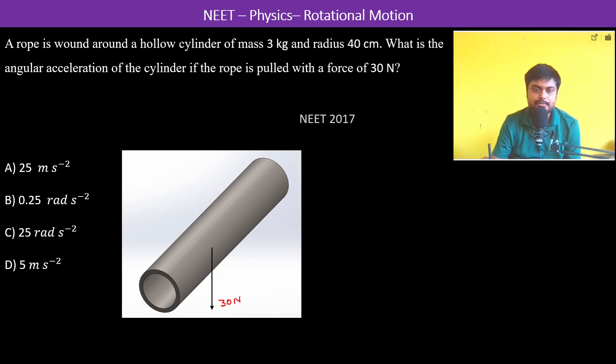As we see here, the force is applied here at the radius. From the center, from the axis of rotation, the distance is 0.4 meters, which is the radius only. So therefore we have the torque is equal to R cross F.